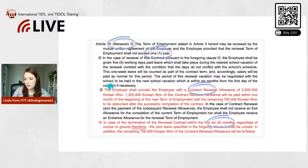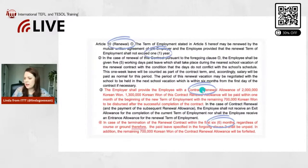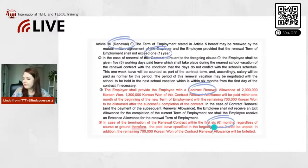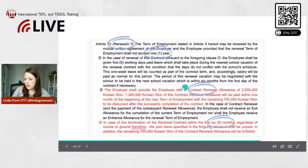There is a contract renewal allowance of two million Korean Won, which is just under two thousand US dollars — really nice. 1.3 million Korean Won will be paid within one month of the beginning of the new term, and the remaining 700,000 Korean Won will be dispersed after successful completion of the contract. In case of termination of the renewal contract within the first six months, the paid leave specified in the foregoing clause shall be unpaid.